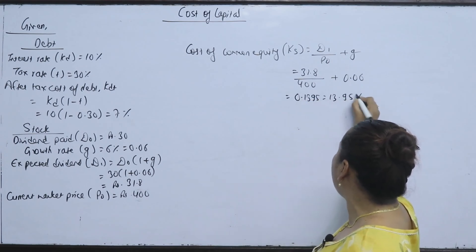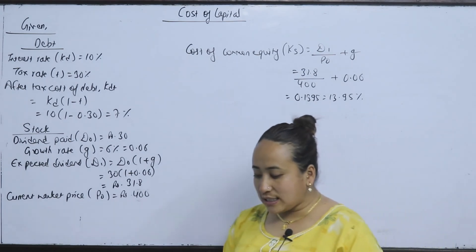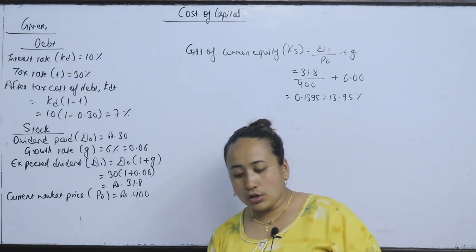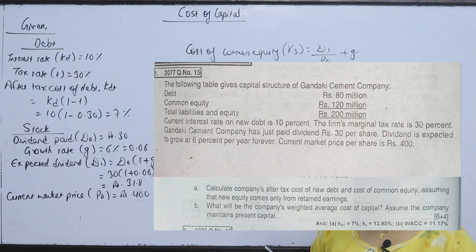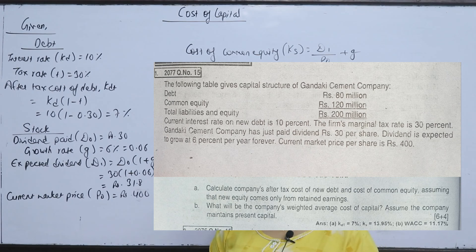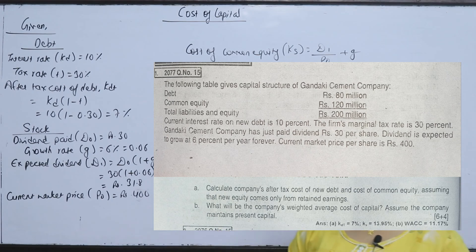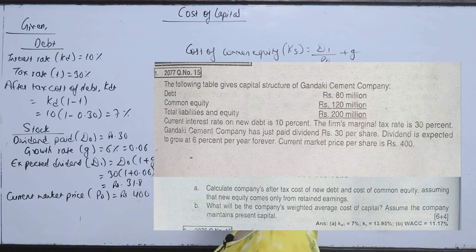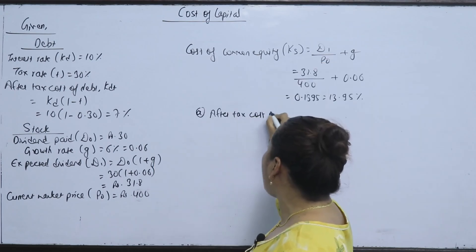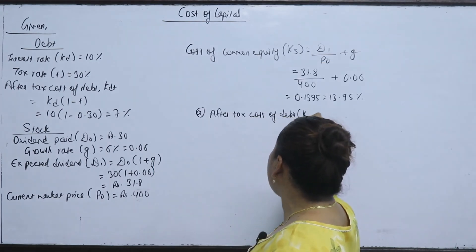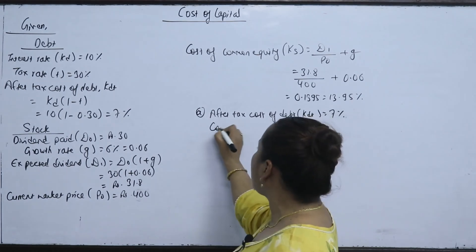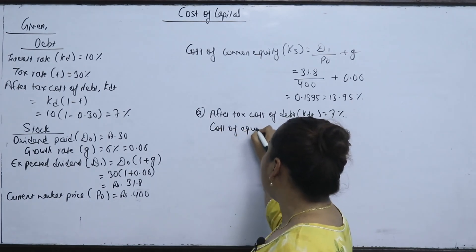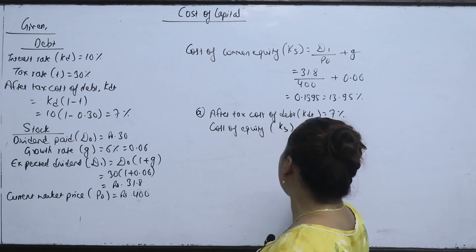The question requires us to calculate the company's after-tax cost of debt and cost of common equity, assuming new equity comes only from retained earnings. The after-tax cost of debt KDT is 7%, and the cost of equity from retained earnings Ks is 13.95%.